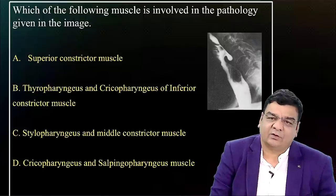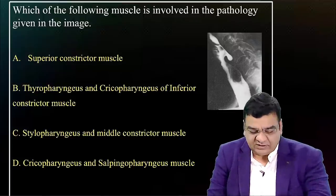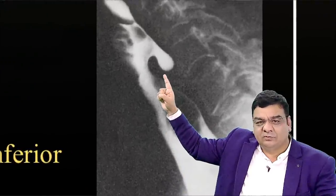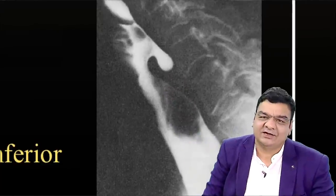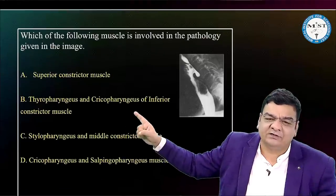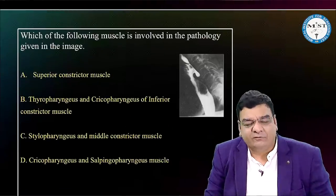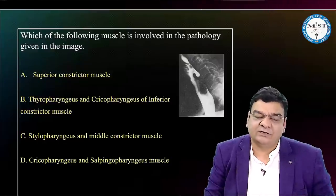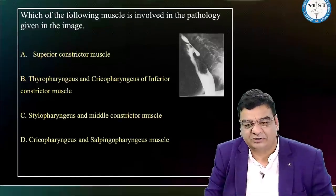Another commonly asked question involving anatomy, ENT, and surgery integration: Killian's dehiscence and the pharyngeal pouch (Zenker's diverticulum). This is outpouching of the posterior pharyngeal wall through Killian's dehiscence — between the fibers of thyropharyngeus and cricopharyngeus of the inferior constrictor muscle. Commonly seen in the elderly, it is a false diverticulum. Diverticula greater than 4 cm require Dohlman's operation.